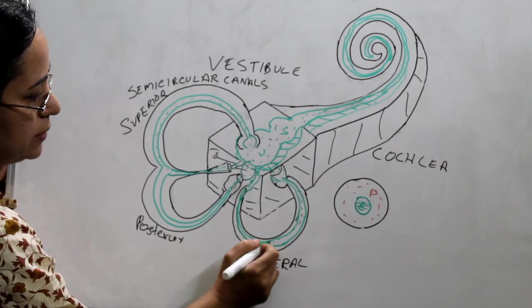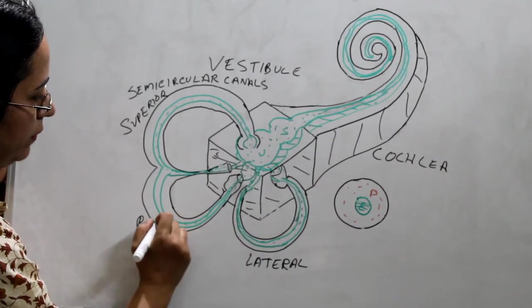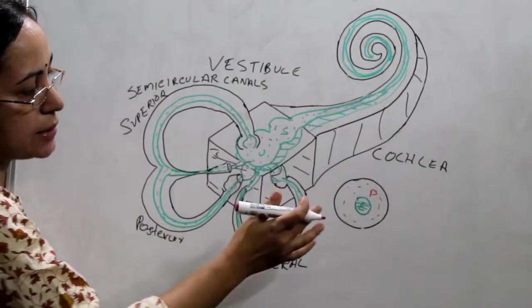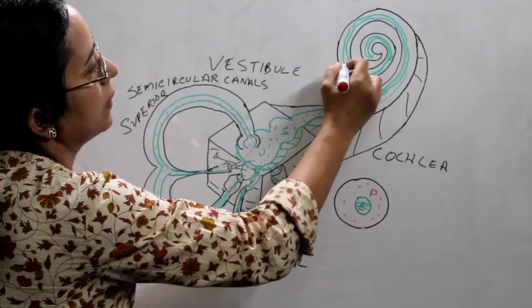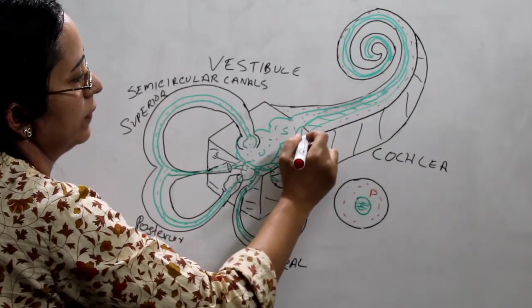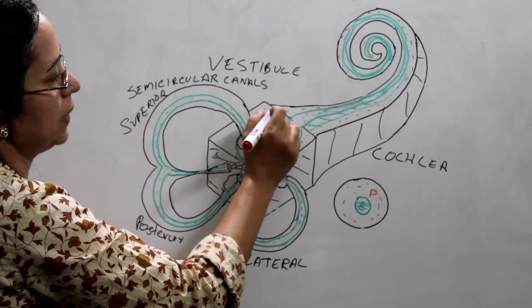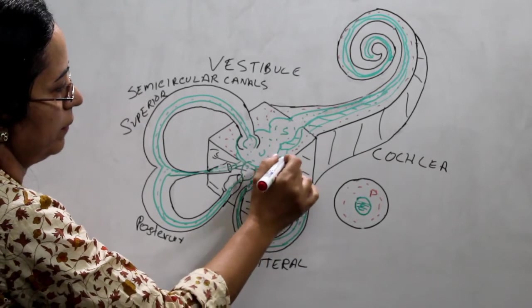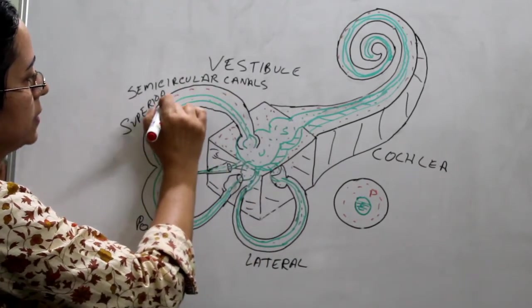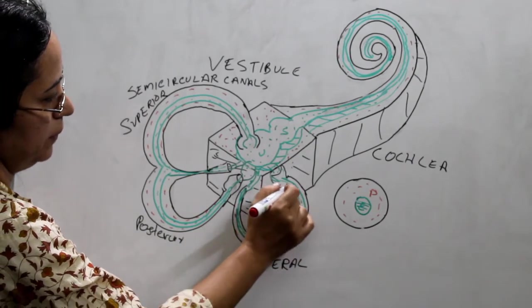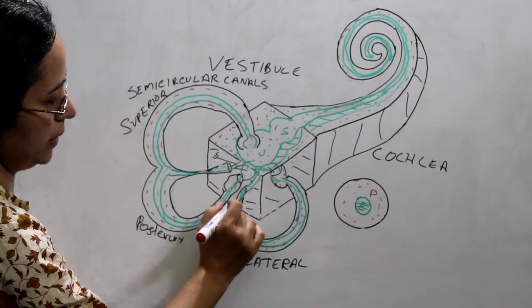So all this membranous labyrinth is filled with the endolymph. And the perilymph — I will draw in red ink — is between the membranous labyrinth and the bony labyrinth. Actually, this membranous labyrinth is floating in the perilymph. All around here comes the perilymph, between the bony labyrinth and the membranous system.